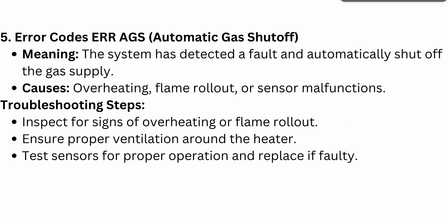Another error code is ERR AGS — automatic gas shutoff. It means the system has detected a fault and automatically shuts off the gas supply. Causes can be overheating, flame rollout, or sensor malfunctions. This is a safety measure. To troubleshoot, inspect for signs of overheating or flame rollout, ensure proper ventilation around the heater, and test sensors for proper operation, replacing any that are found faulty.